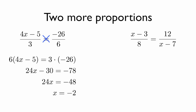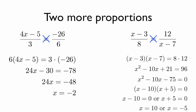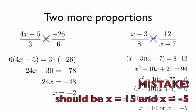With the other example, our cross product gives us x minus 3 times x minus 7 equals 8 times 12. Foiling out gives us x squared minus 10x plus 21 equals 96, and solving by factoring gives a final answer of x equals 10 or x equals negative 5. Two possible answers here.